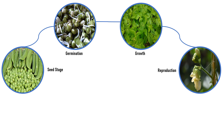The fertilized eggs become seeds. In this stage of the flower life cycle in fruit-producing plants, the ovary ripens and becomes fruit. This is about reproduction.